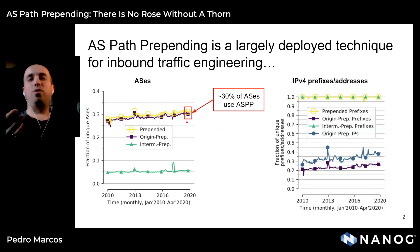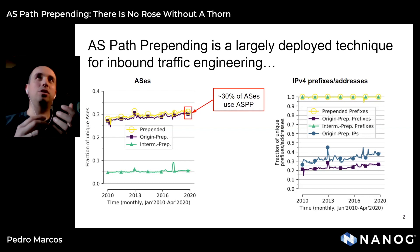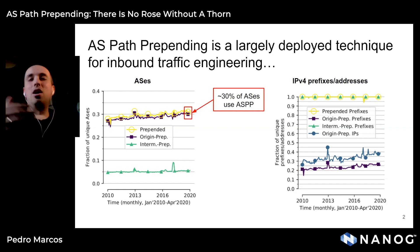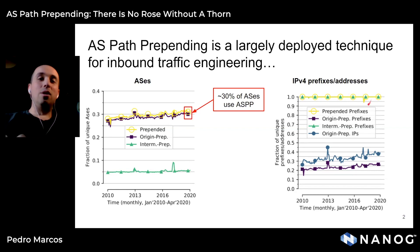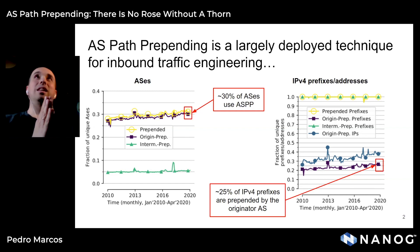Prepending occurs either when ASes originate their own prefixes or when redistributing prefixes advertised by other ASes, with the most common case being prepending when originating prefixes. If we check the use of path prepending in IPv4 prefixes and addresses, we see two things: all prefixes and addresses are prepended to at least a given part of the internet, largely due to large ASes that prepend before redistributing. But 25% of IPv4 prefixes are being prepended by the prefix originator itself.